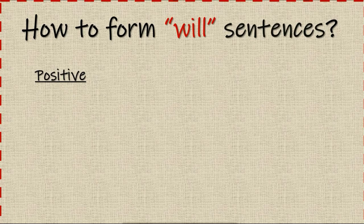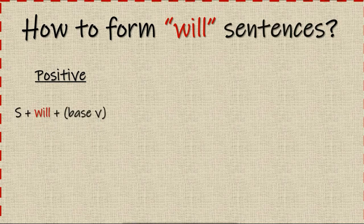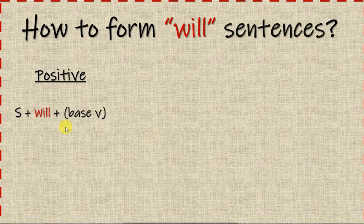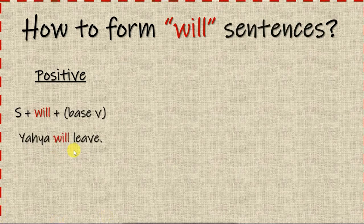The first is the positive form. To make a positive sentence, use the subject plus 'will' plus the verb in its base form — you cannot add anything to this verb. For example: 'Yahya will leave.' Here, 'Yahya' is the subject, 'will' is the modal verb, and 'leave' is the verb in its base form.